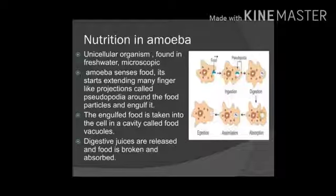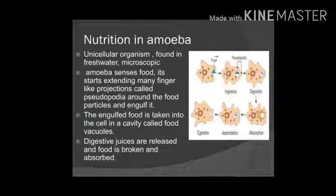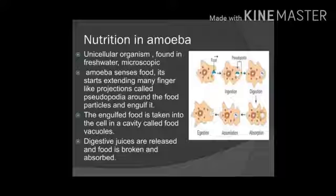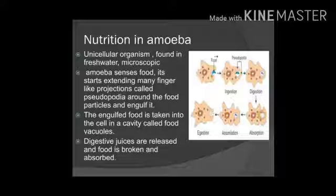Now we will study nutrition in amoeba. Amoeba is a unicellular organism found in fresh water and is microscopic. When food is nearby, amoeba senses it and starts extending many finger-like projections called pseudopodia, also known as false feet. These extend around the food and enclose it in a food vacuole. Enzymes from the cytoplasm are secreted into the food vacuole, the food is broken down and absorbed, and finally undigested food is expelled out. Amoeba constantly changes its shape and position.